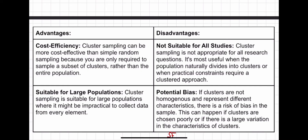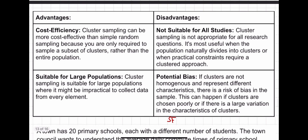Another advantage is that it is suitable for large populations. A disadvantage is there is potential bias. I've written the word SF because sometimes you may need a sampling frame. But unlike a simple random sample, this sampling frame isn't going to be a list of the population — it's going to be a sampling frame of clusters.